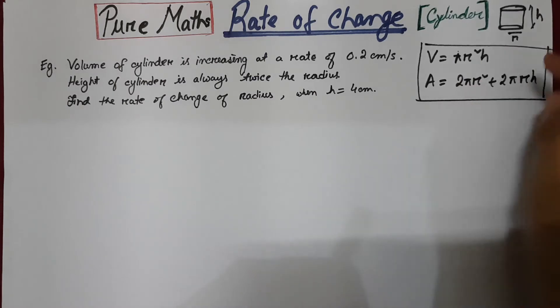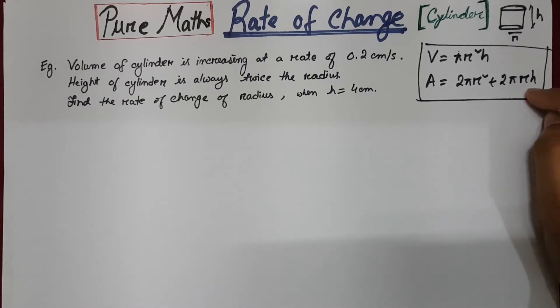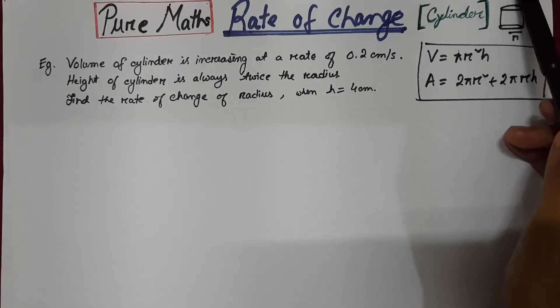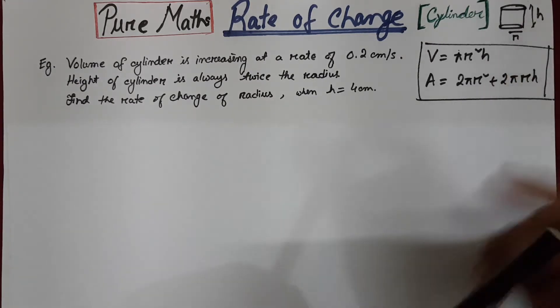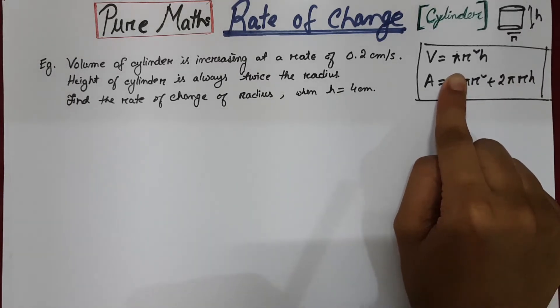So 2 pi r square is because you have two circles, one at the top and another one at the bottom. And 2 pi r h is for the curved surface area of the cylinder. So if you have an open cylinder, you have to take only the base, the circle for the base. So you use pi r square plus 2 pi r h.